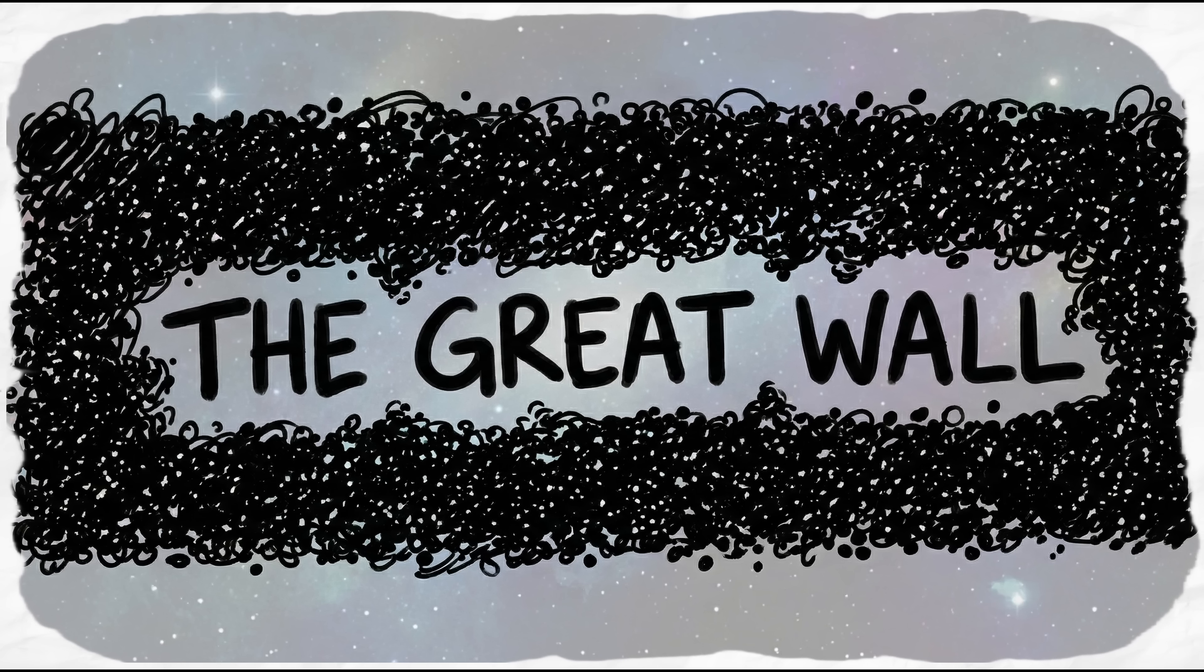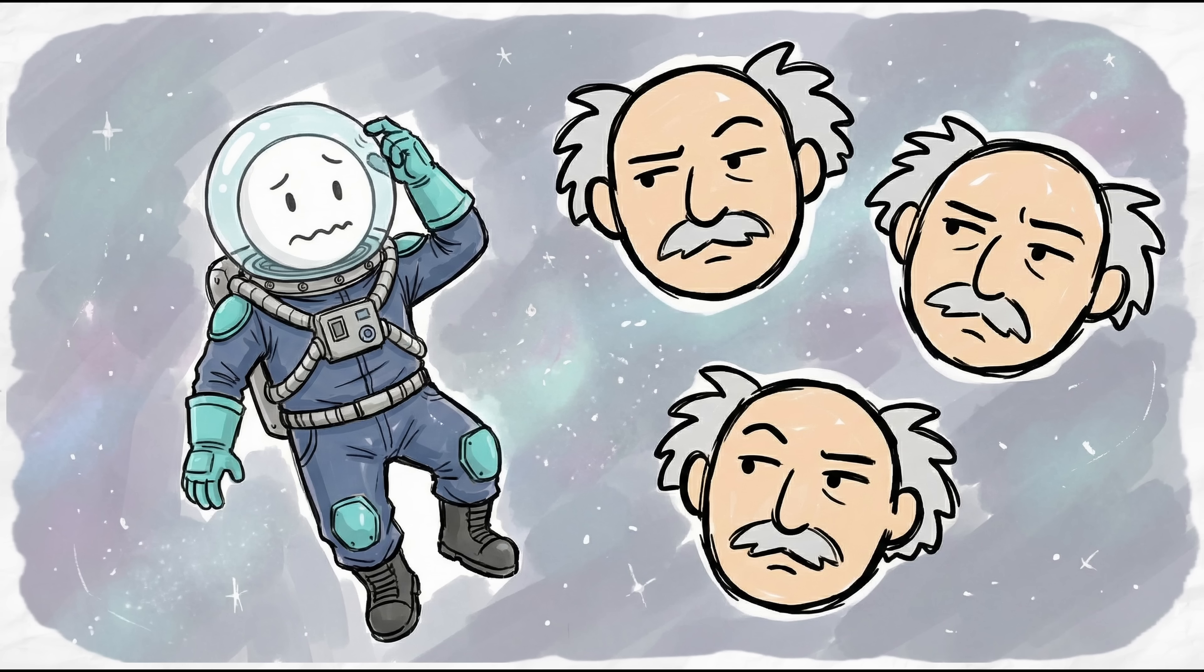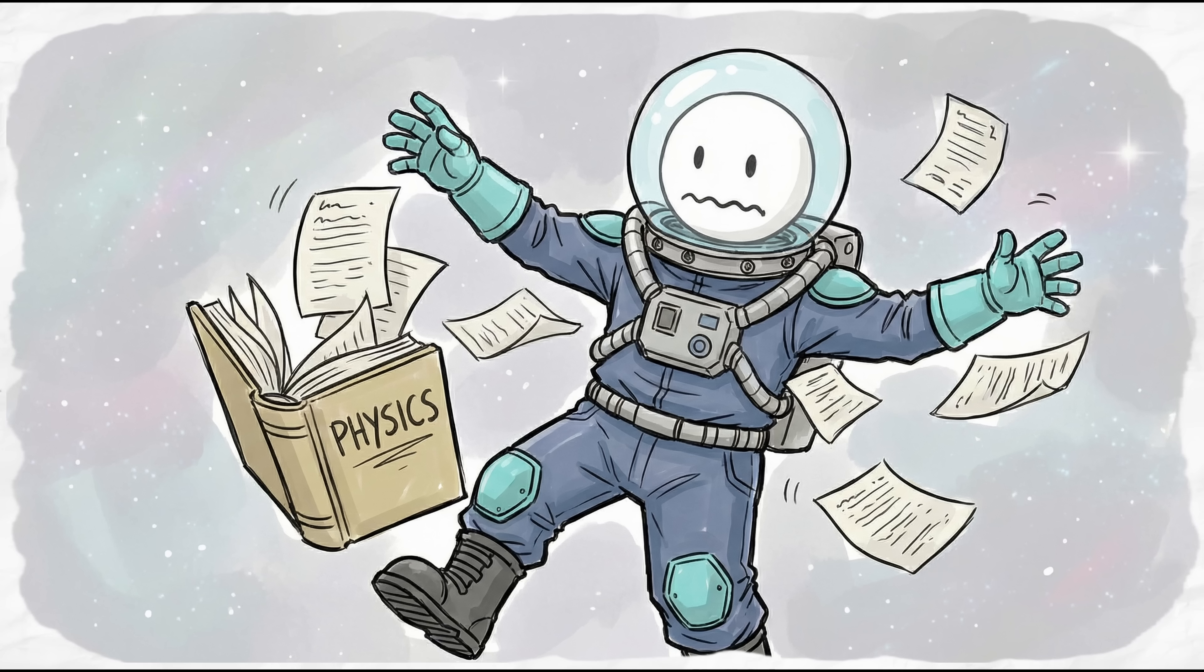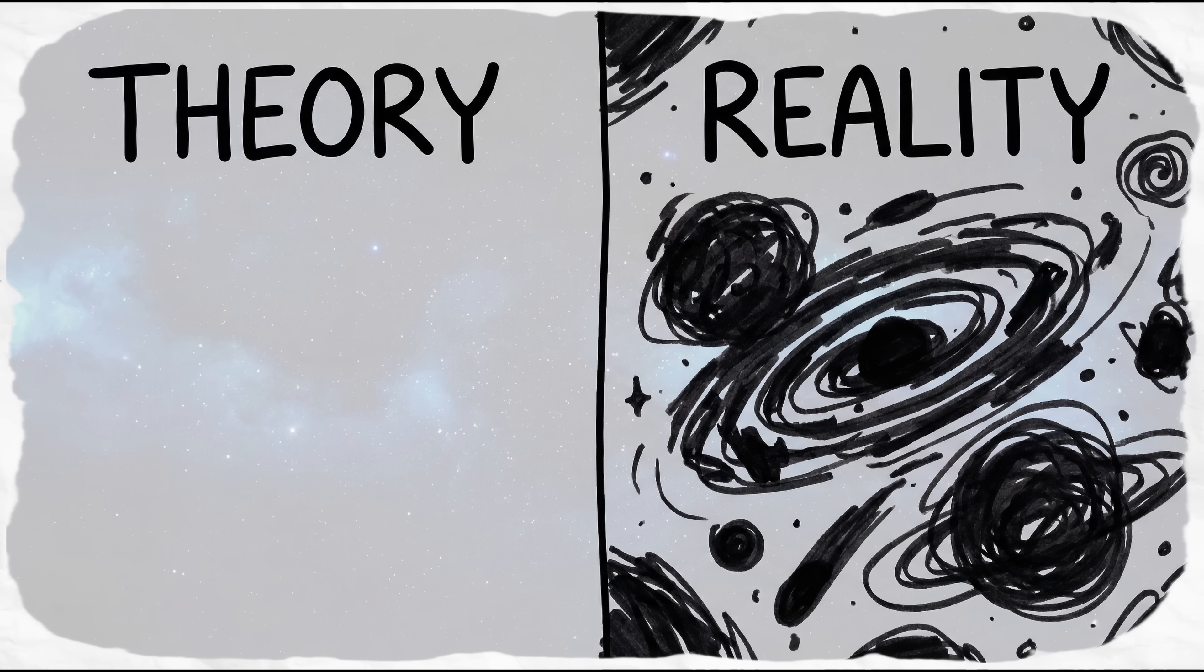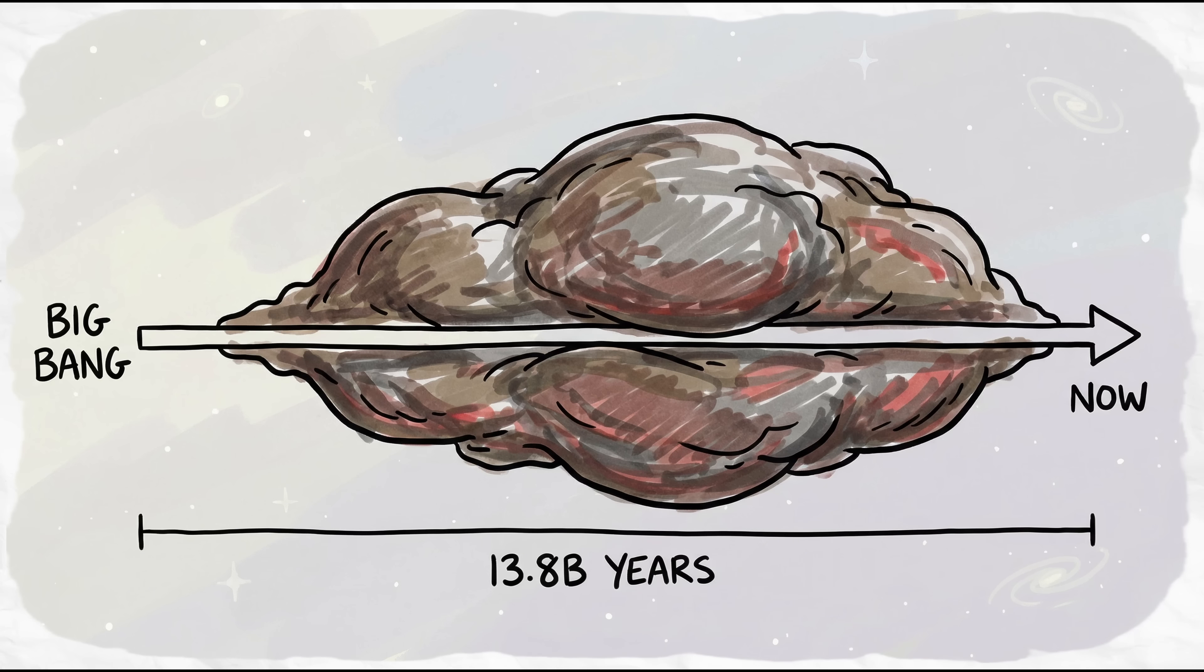But the most controversial is the Hercules-Corona-Borealis Great Wall. Spanning 10 billion light-years. It is so large that many astronomers dismiss it as a statistical ghost in our data. If it is real, it messes with our basic ideas about how smooth the early universe was, makes you wonder how something that huge showed up in only 13.8 billion years.